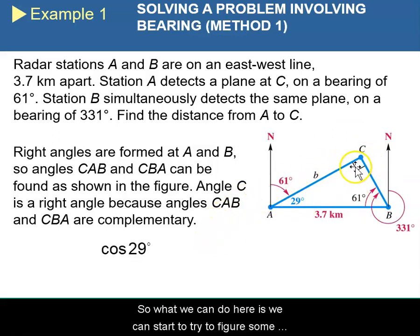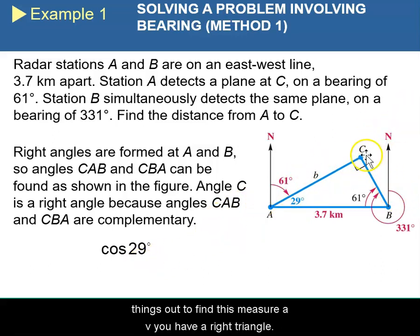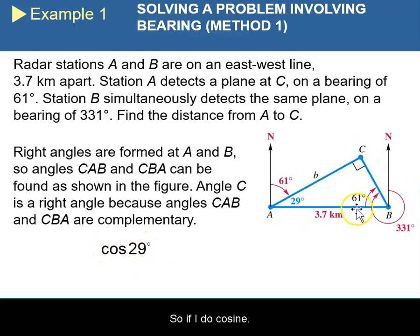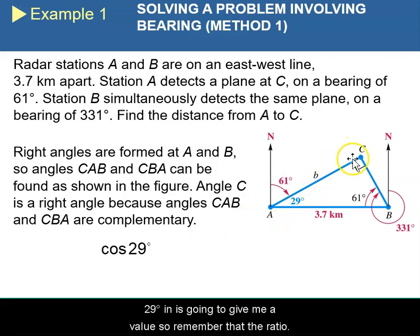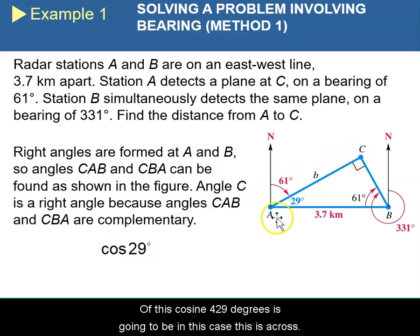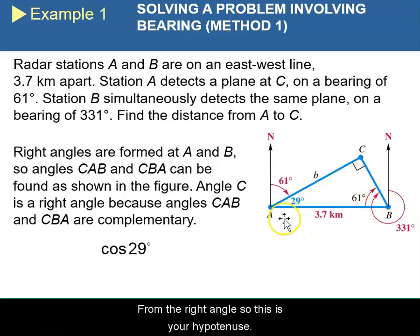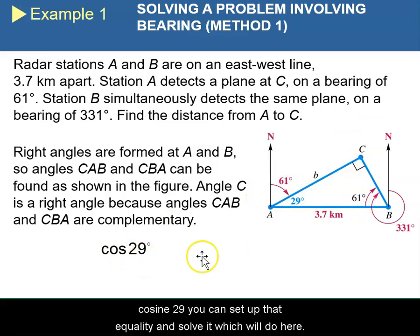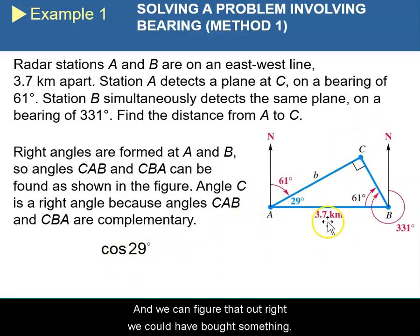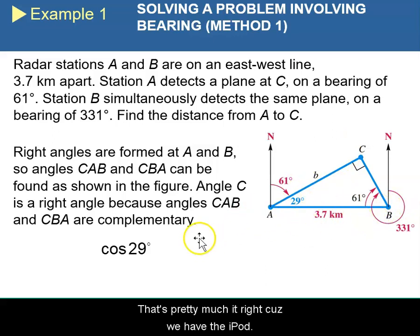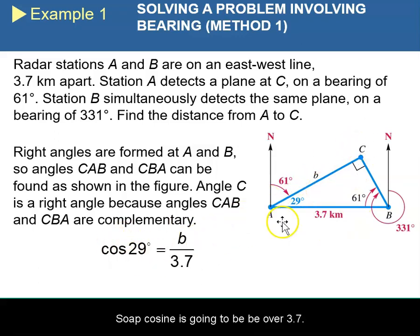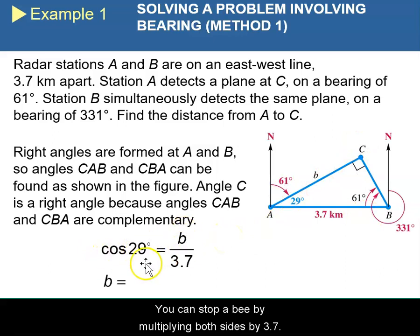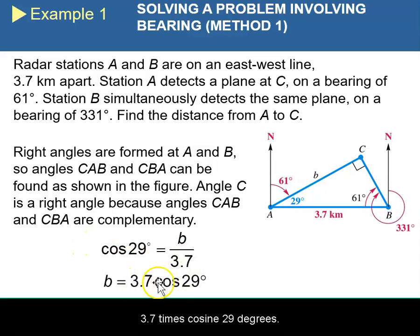What we can do here is start to figure some things out. To find this measure of B, we have a right triangle. So cosine of 29 degrees is going to give me a value. The ratio of cosine for 29 degrees — since the side across from the right angle is the hypotenuse — cosine of 29 gives the adjacent side over the hypotenuse side. We can set up that equality and solve it. Cosine of 29 is going to be B over 3.7.